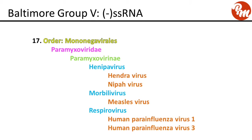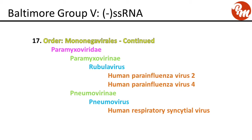Order mononegavirales, family Paramyxoviridae, subfamily paramyxovirinae. Genus henipavirus includes Hendra virus and Nipah virus. Genus morbillivirus includes measles virus. Genus respirovirus includes human parainfluenza virus 1 and human parainfluenza virus 3. Genus rubulavirus includes human parainfluenza virus 2 and 4. Subfamily pneumovirinae includes genus pneumovirus with human respiratory syncytial virus.